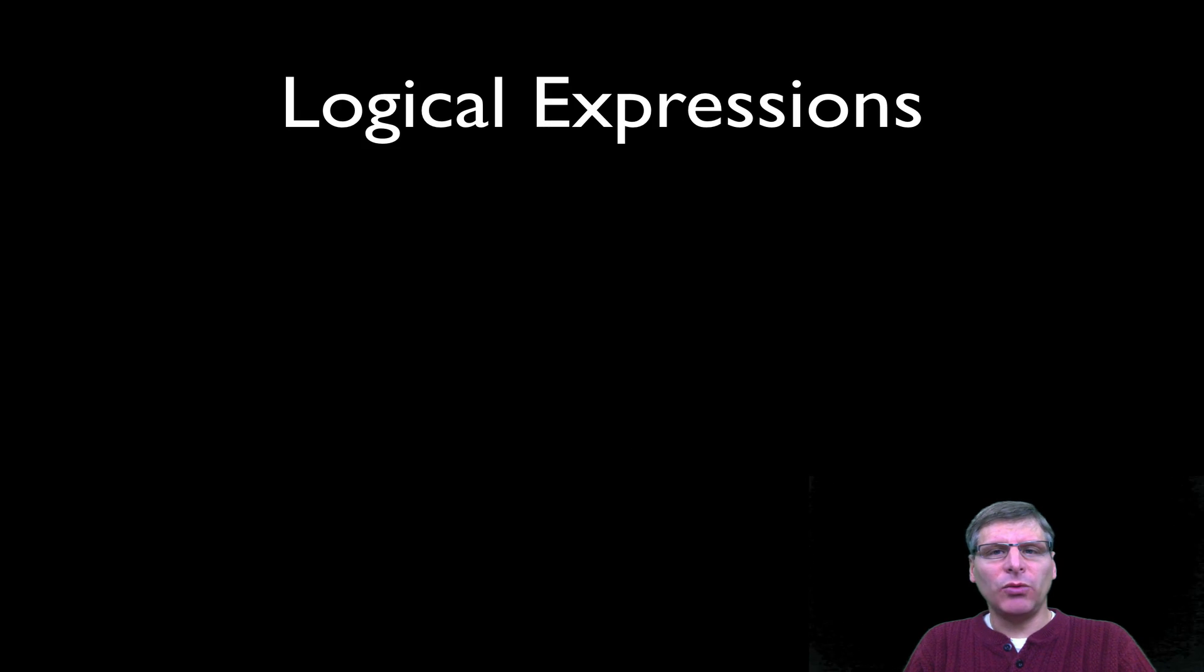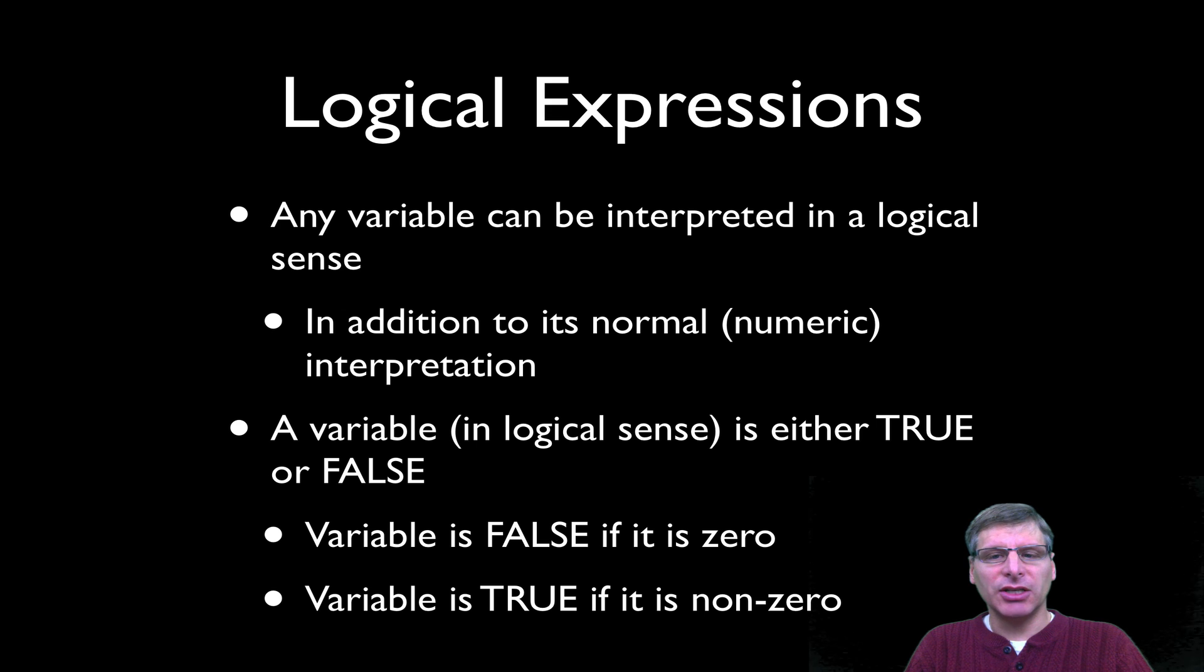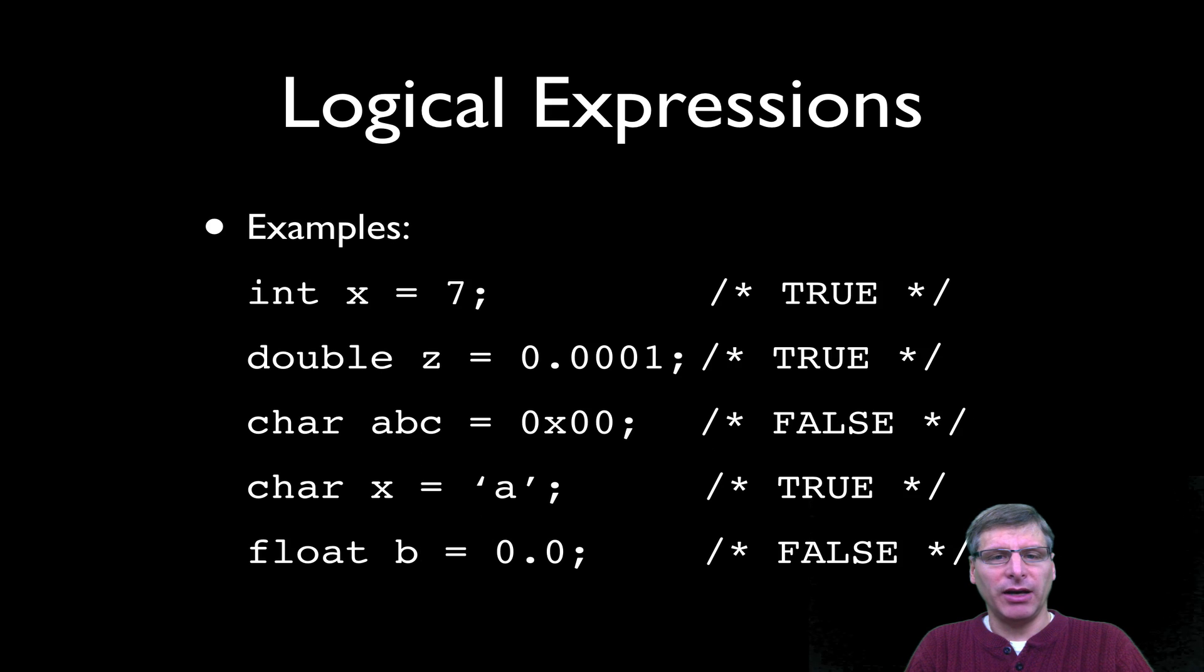Finally, in C, we also have logical expressions. And in C, any variable can be interpreted in a logical sense. So this is in addition to its normal numeric interpretation. So a variable in a logic sense is either going to be true or false. And so that's a boolean interpretation. And the variable is going to be false if its value is zero. And it's going to be assumed true if it holds any nonzero value.